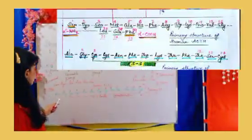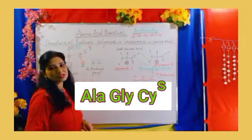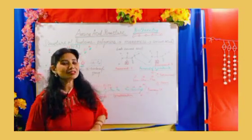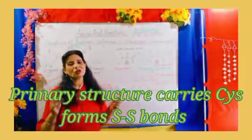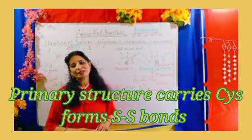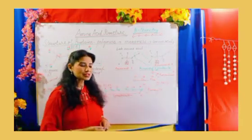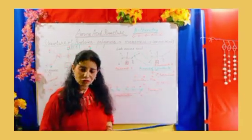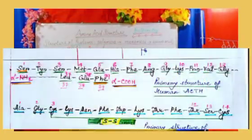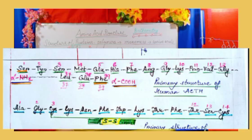When arranging the primary structure sequentially with numbering, the amino acid residues include alanine, glycine, and cysteine. Wherever cysteine appears in the primary structure of a protein, a disulfide bond is formed. You can see cysteine at the first position, then alanine, glycine, and cysteine again at the 14th position.